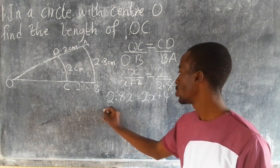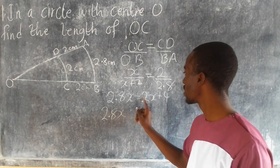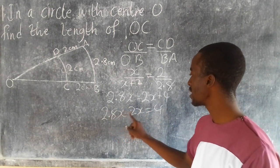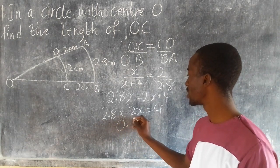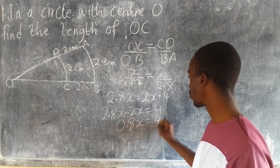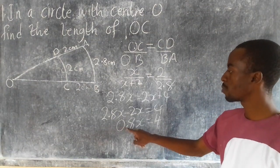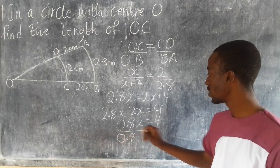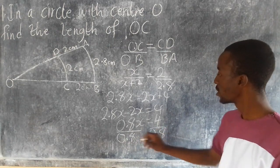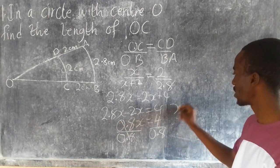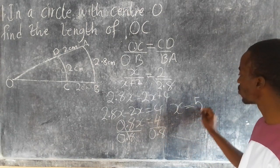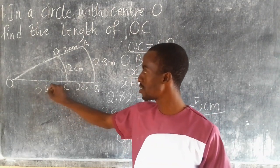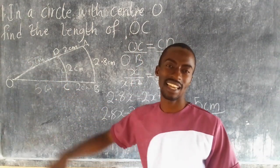You put the like terms together, so it will be 2.8X. If you move this to the other side, this minus this gives me 0.8X equals 4. At this point, we divide by 0.8 on both sides. So 0.8 on both sides. You cancel here, and this means X equals 5 cm. This simply means here we have 5, and here we have 5.